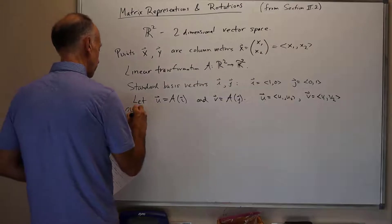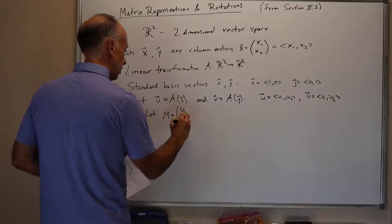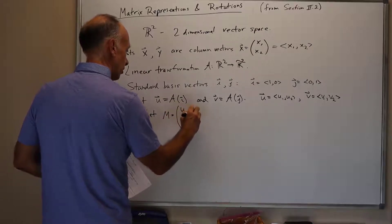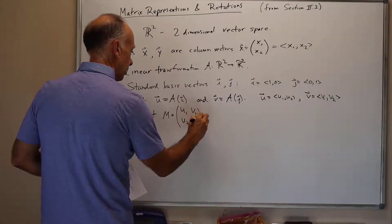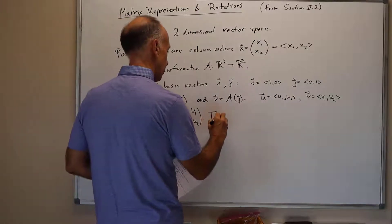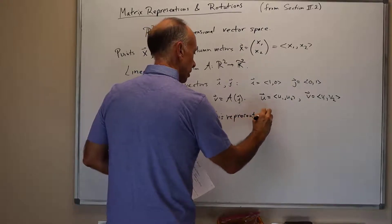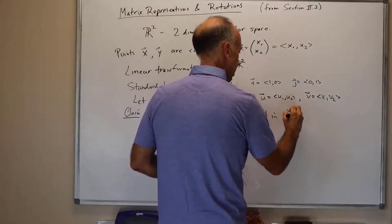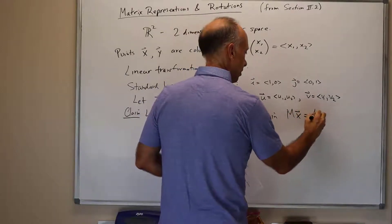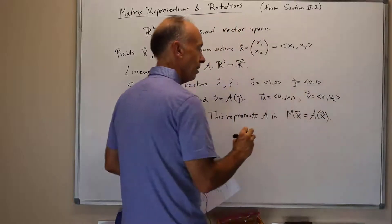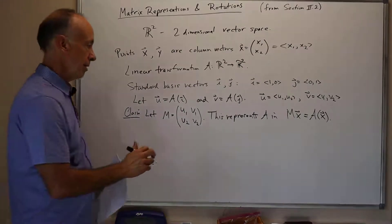We're going to use these to give a matrix representation for A. The claim here is: we let M be the matrix with columns u1, u2 as the first column and v1, v2 as the second column. The claim is this represents A in that the following holds: M, the matrix M times the vector x is equal to the result of transforming x with the linear transformation A.